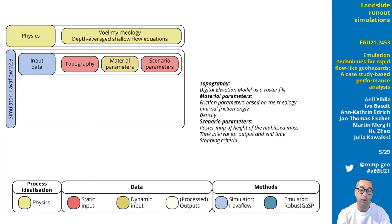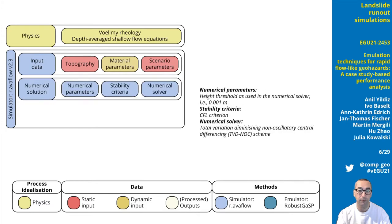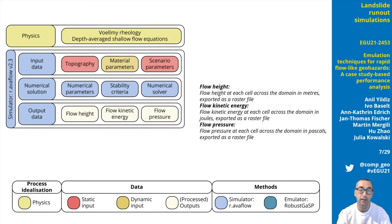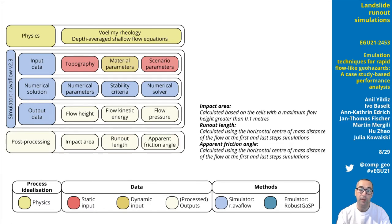Our AVA flow requires a digital elevation model as input topography data. The other input data can be categorized as material parameters and scenario parameters. While the first one is related to the rheology and flow characteristics, the latter controls case-specific properties of a simulation. A non-oscillatory central differencing numerical scheme with CFL criterion for stability and a minimum flow height of 0.001 meter as threshold forms the numerical solution of R-AVA flow. The main output R-AVA flow generates is a raster file of flow heights in each cell in meters, or alternatively raster files with flow kinetic energy or pressure.